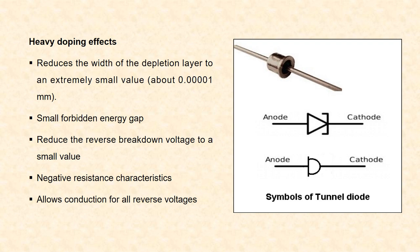Heavy doping also causes negative resistance in the characteristics — that is, as we increase the voltage, the current decreases, and as we decrease the voltage, the current increases. It also allows the tunnel diode to conduct for all the reverse voltages.